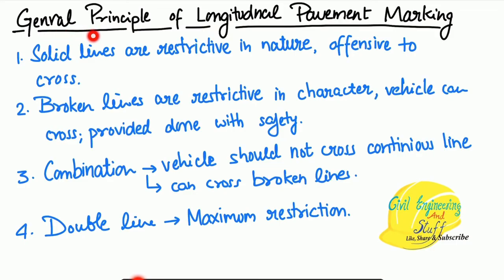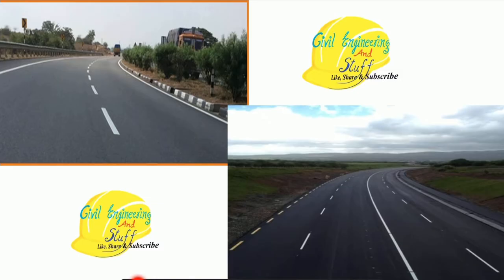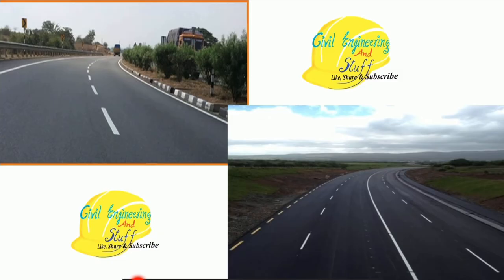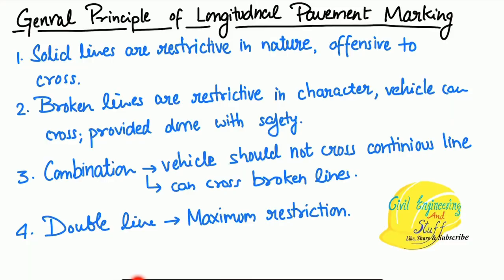There are certain principles regarding longitudinal pavement markings. The first type is solid lines, which are restrictive in nature — it is an offense to cross them. Solid lines mean you are not allowed to cross. Then we have broken lines, which also have some form of restriction, but you are allowed to cross. Broken lines are used to provide a demarcation between different types of lanes.